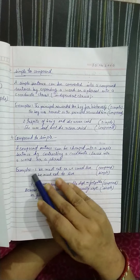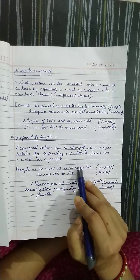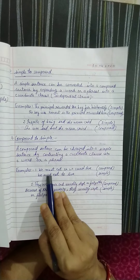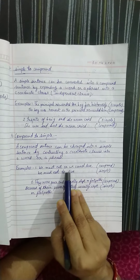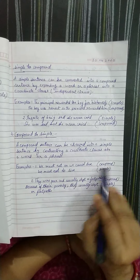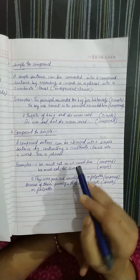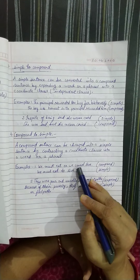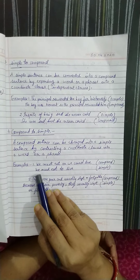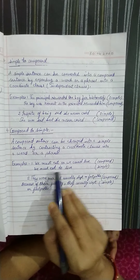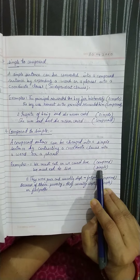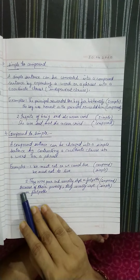Now we are going to convert it into a compound sentence. 'The boy was honest, so the principal rewarded him.' When these two clauses are joined, it becomes a compound sentence. Understood?